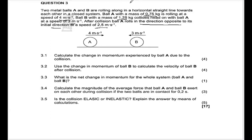Note that if ball A is now rolling in the opposite direction to its initial direction, that means this speed must now be indicated as negative. When it was rolling to the right, the eastern direction, that was positive. But after colliding with ball B, it rebounds and goes in the opposite direction, so the 2.5 is now negative. It is very important to note this.